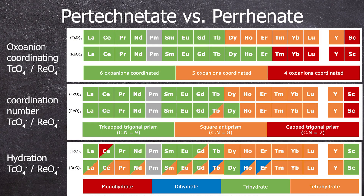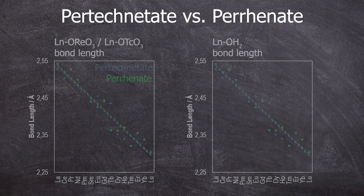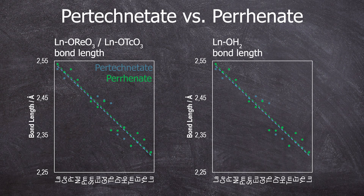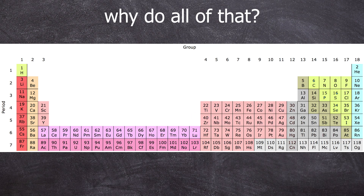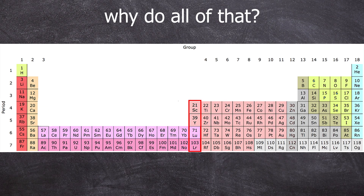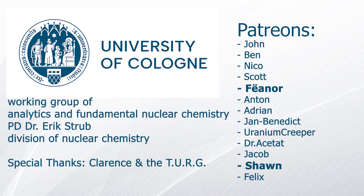Compared to perrhenates from the previous video, differences between the perrhenates and the pertechnetates are evident. Here are the bond lengths of the lanthanide–oxygen in pertechnetates and perrhenates, and the bond lengths of the lanthanide to crystal water oxygen. Why is this important? This is fundamental research. Characterizing pertechnetates against perrhenates helps us understand atomic theories better and the structure of the periodic table. Additionally, characterizing lanthanides aids in understanding the periodic table structure, as there has been a long-standing debate on how lanthanides should be placed. A special thanks goes to Clarence for guiding me through the synthesis for this video, and to our Technetium Undergraduate Research Group, TURK, for the countless hours spent characterizing these pertechnetates. And to my Patreons. Thank you for your attention and goodbye!